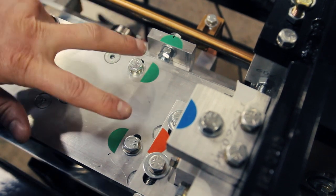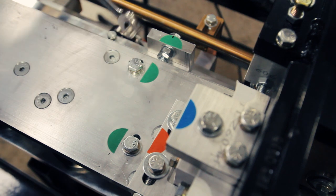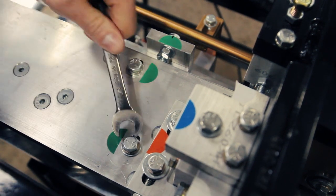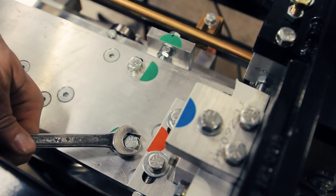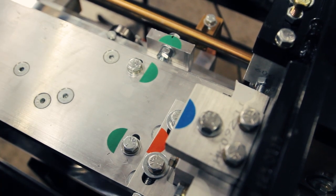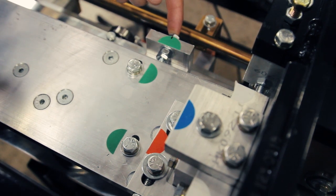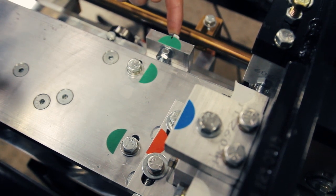First thing you want to do is loosen these two bolts about a half turn. Next we're going to adjust the head of this fastener, and you want to adjust this depending on what you see with your gutter.